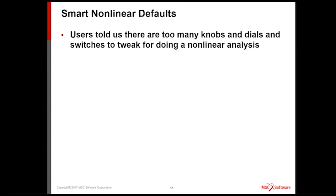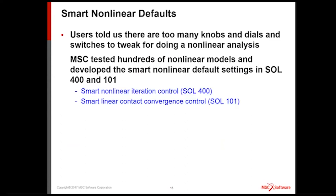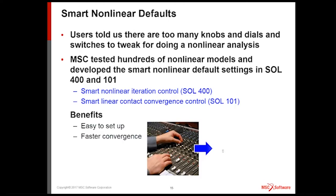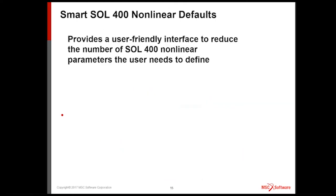So our users told us, look, we don't want to spend hours tweaking the knobs and the switches. Help us. So MSC actually initiated a team of engineers, and we tested hundreds of nonlinear models. And we came out with smart defaults in Solution 101 and 400. And Solution 400, which I will show you today, are smart defaults for iteration control. And for Solution 101, we have similar smart defaults, but they're only for compact. So the benefits really, we want you to be able to use it easily, easy to set up, and fast convergence.